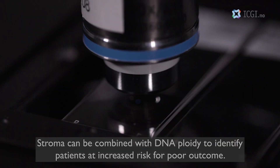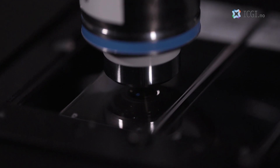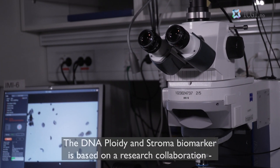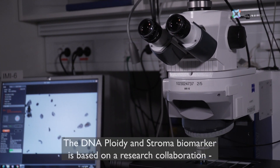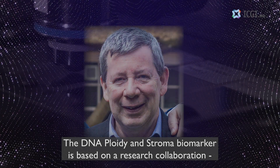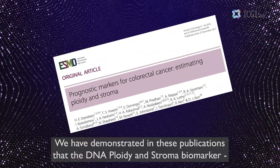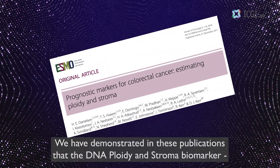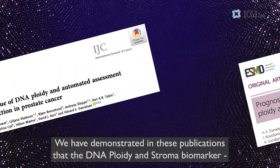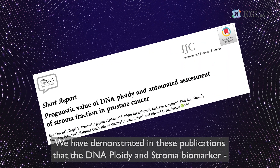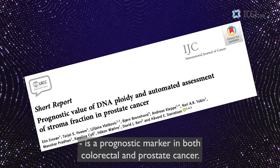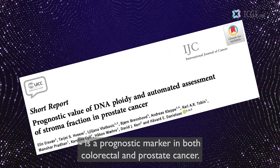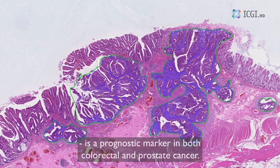Stroma can be combined with DNA ploidy to identify patients at increased risk for poor outcome. The DNA ploidy and stroma biomarker is based on a research collaboration with Professor David Kerr and the University of Oxford. We have demonstrated in these publications that the DNA ploidy and stroma biomarker is a prognostic marker in both colorectal and prostate cancer.